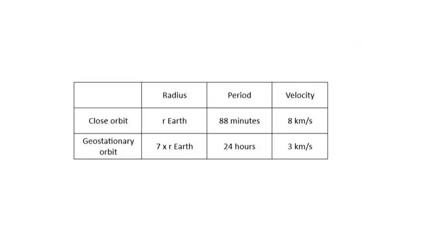I recommend learning this summary table. For a close orbit the radius is approximately the radius of the Earth, the period is about 88 minutes — around the world in 80 minutes, not 80 days — and the velocity is about 8 km/s. For the geostationary orbit the radius is about 7 times the radius of the Earth, the period is 24 hours, and the velocity works out at about 3 km/s. Knowing these values helps you check your calculations in the exam.